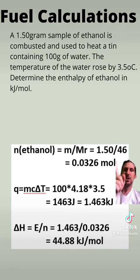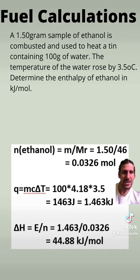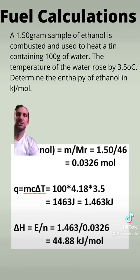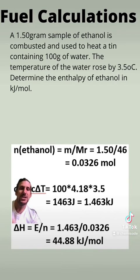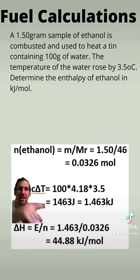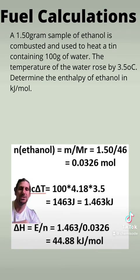Once I know my moles and I know my energy, I can simply do the calculation, which is kilojoules divided by moles. So my enthalpy, which is delta H, is equal to energy divided by moles — the energy I have from the Q = mcΔT calculation divided by my moles equals the answer shown below.